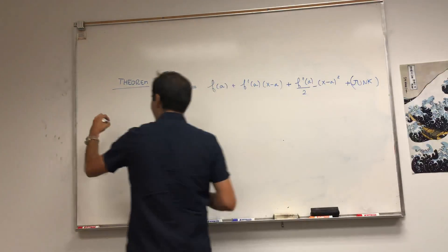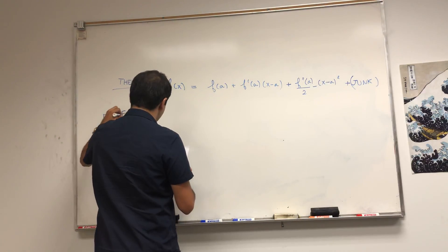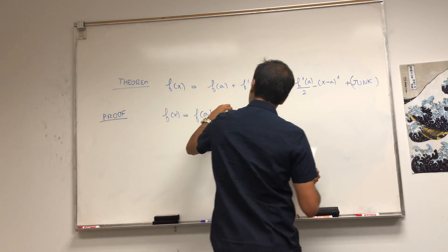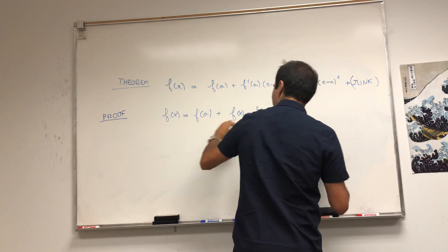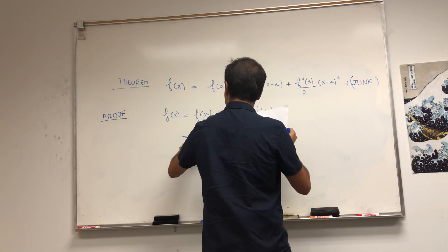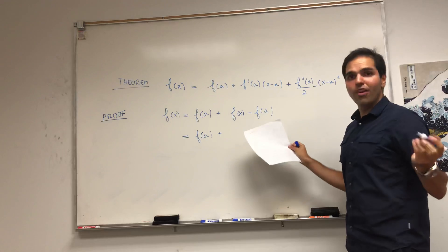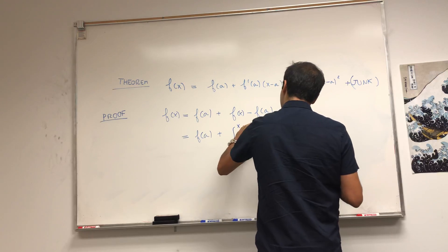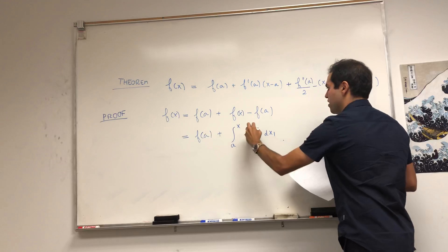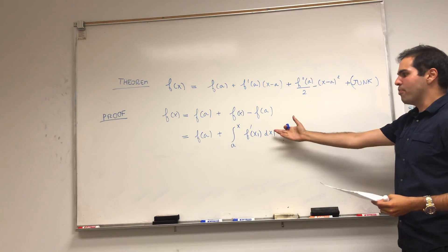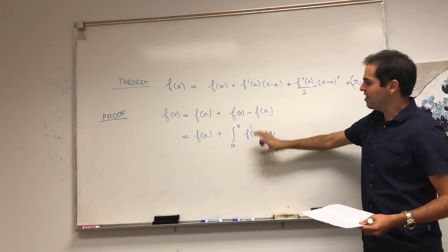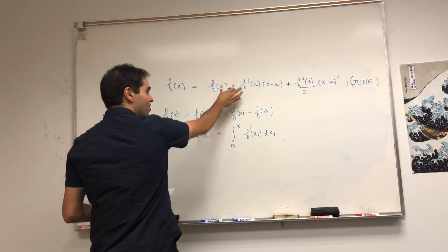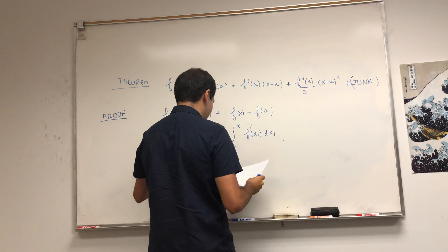It's just repeated application of the fundamental theorem of calculus. What is f(x)? Well, it's equal to f(a) plus the difference f(x) minus f(a). That difference can be written as the integral from a to x of f'(x₁) dx₁. Notice if you calculate this you get f(x) minus f(a), so this gives us the first term of Taylor's formula.